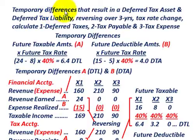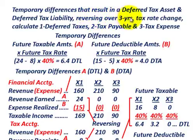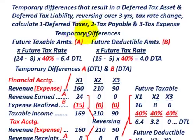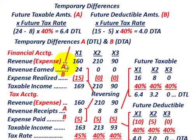We're going to be going over some temporary differences between financial accounting and tax accounting that result in a deferred tax asset and a deferred tax liability. The problem is set up to reverse these temporary differences over a three-year period with a tax rate change during the period. We want to calculate our deferred taxes, taxes payable, and tax expense based on these temporary differences, stepping through the mechanics carefully.